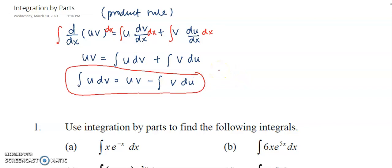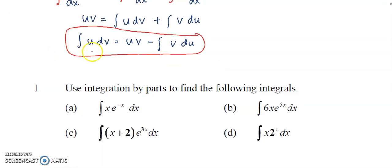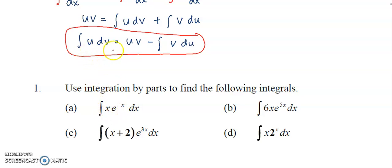Once you have any question in the form of something multiplied by something — for example, x multiplied by an exponential function — and you're not going to use the substitution method because it will fail, then we proceed to integration by parts. When you have this type of function, you take one function to become u and the other function to become dv.